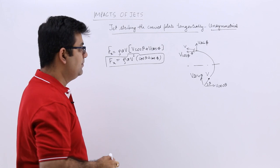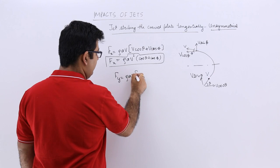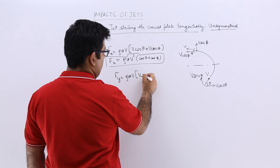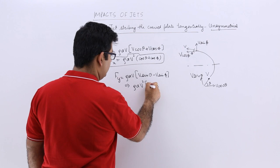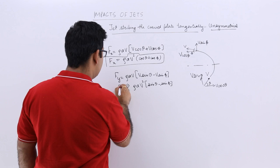Similarly I can find out fy. fy would be rho a into V into V sin theta minus V sin phi. So this will be equal to rho a V square into sin theta minus sin phi. That is fy.